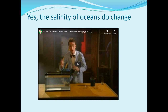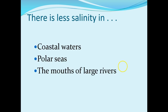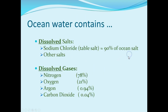Salinity changes density: higher salinity equals higher density, lower salinity equals lower density. More dense material sinks through less dense material — this is part of what drives deep ocean currents. Areas of lower salinity include coastal waters where runoff occurs, polar seas, and the mouths of large rivers where fresh water empties into the ocean.